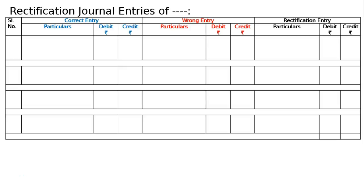The question is past journal entries rectifying the following errors. There will be one correct entry, one wrong entry, and the other one is the rectifying entry.